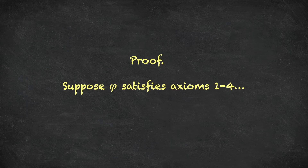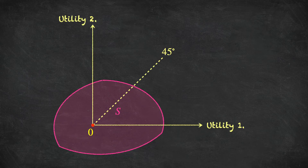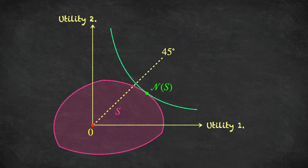Suppose phi satisfies axioms 1 through 4, and let's take a typical bargaining problem. Here I've illustrated a bargaining set S, and we don't know where phi of S is yet, but I've pointed on the diagram to the Nash bargaining solution for this problem — we know what N of S is. The Nash bargaining solution in this case chooses utility A* 1 for player 1 and utility A* 2 for player 2.